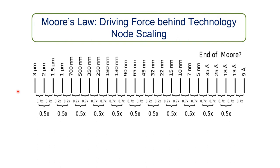The driving force behind process node scaling is Moore's Law. To achieve density doubling, we need to scale by roughly 0.7x. You can see here each node: 3 multiplied by 0.7x gives 2 micrometers, 2 multiplied by 0.7x gives 1.5, and so on. Today we are in the area of 7 nanometer to 5 nanometer. To get half the area, 0.7x multiplied by 0.7x is roughly 0.5 — that is how you halve the area.